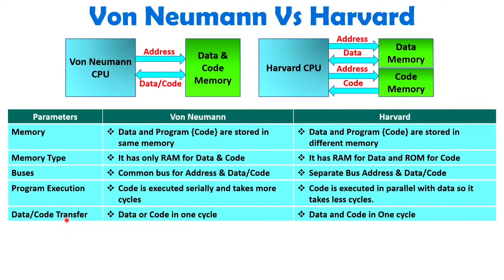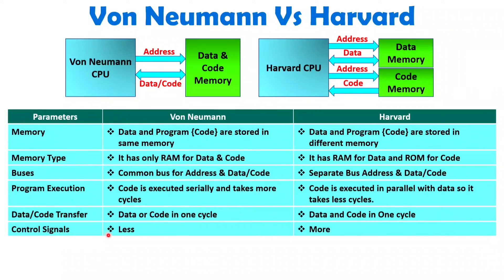For data-code transfer, with Von Neumann you can transfer either data or code in a single machine cycle. With Harvard architecture, data and code transfer can both happen in one machine cycle since we have separate addressing. Regarding control signals, Von Neumann needs fewer control signals because of the common memory — those signals are memory read and memory write. Harvard architecture requires more control signals: for data memory you need memory read and memory write, and for code memory you need a memory read control signal.